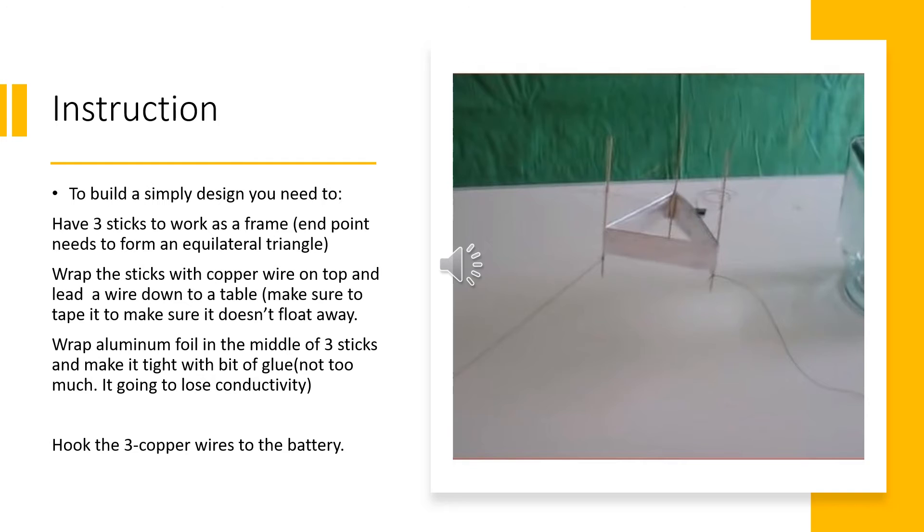For the craft, you need three sticks with the end point that's shaped like a triangle, at least an equilateral triangle. Wrap the sticks with copper wire on top, and lead a wire down to the table, and make sure to tape it down so it won't just fly off everywhere when the craft lifts up. Also, wrap aluminum foil between the three sticks, and make sure you put a little bit of glue on it. Don't put too much because it'll lose conductivity if you put too much in it. And also, hook up all three wires to a battery.